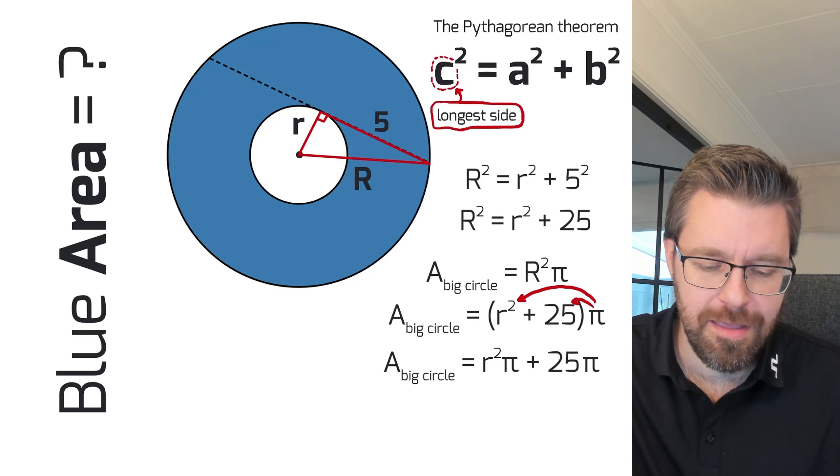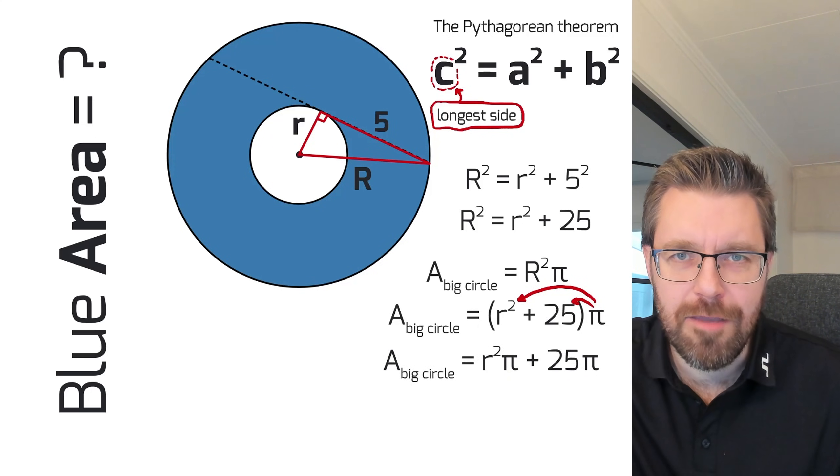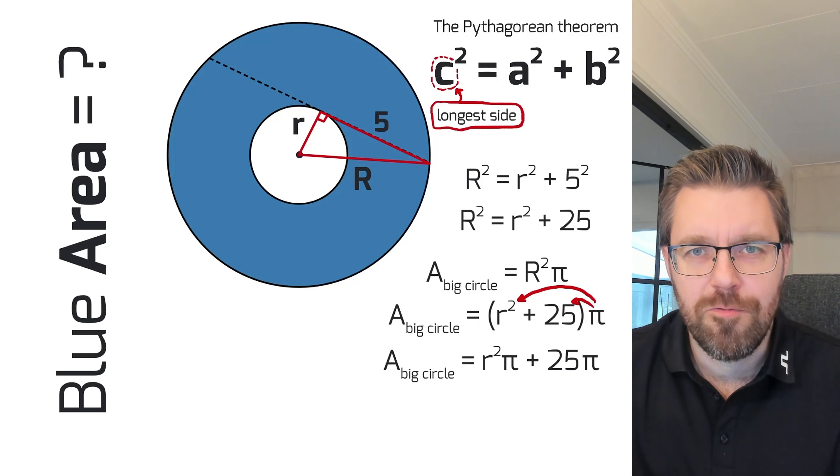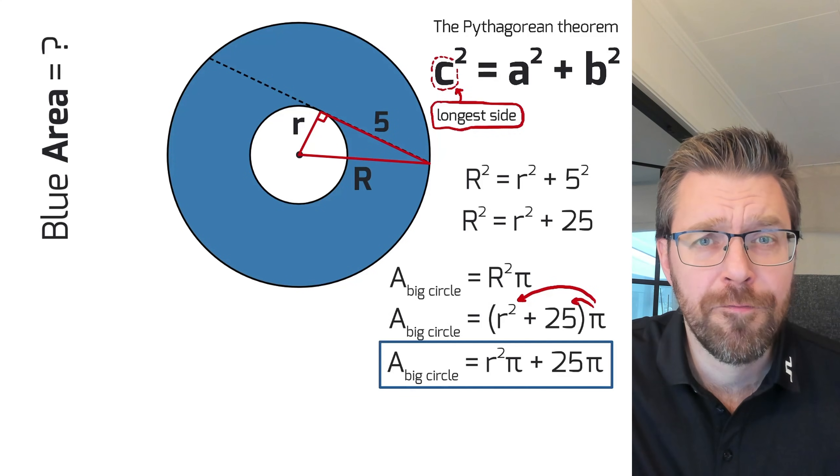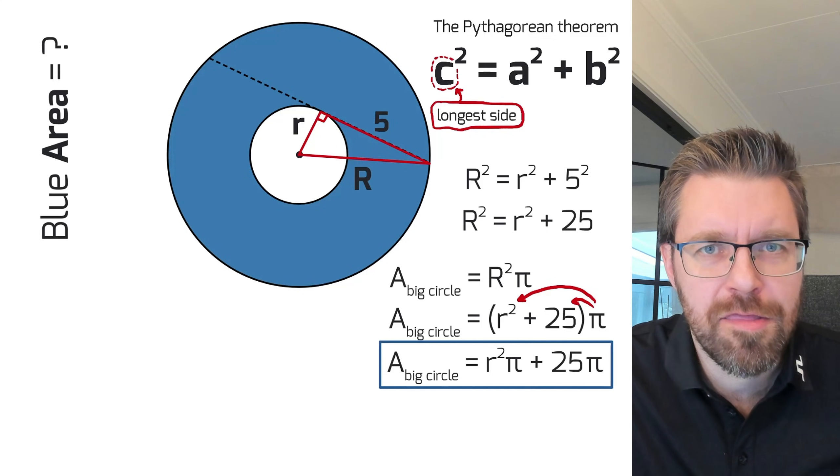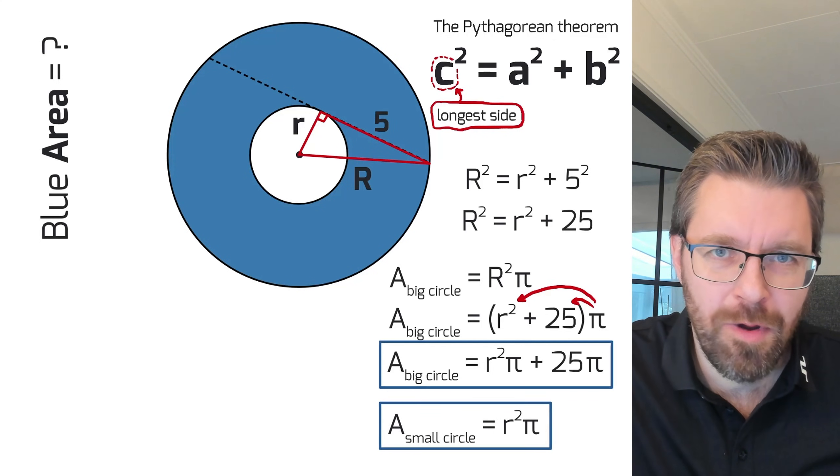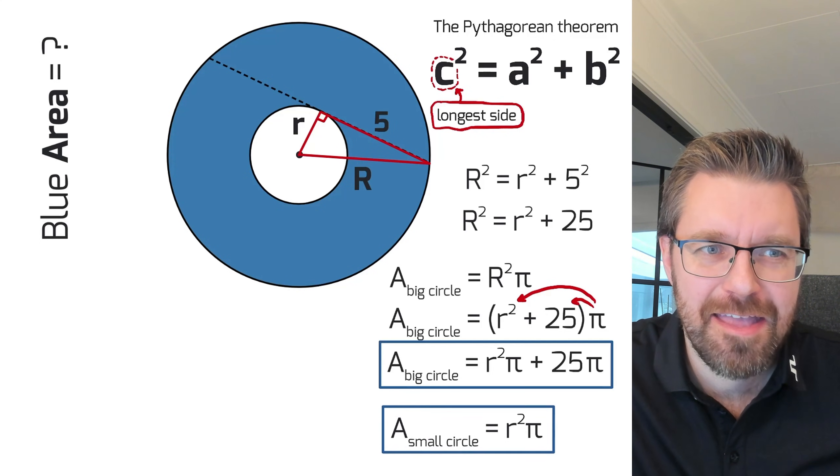And then the area of the big circle equals r²π plus 25π. And of course, the area of the little circle is small radius r times π.